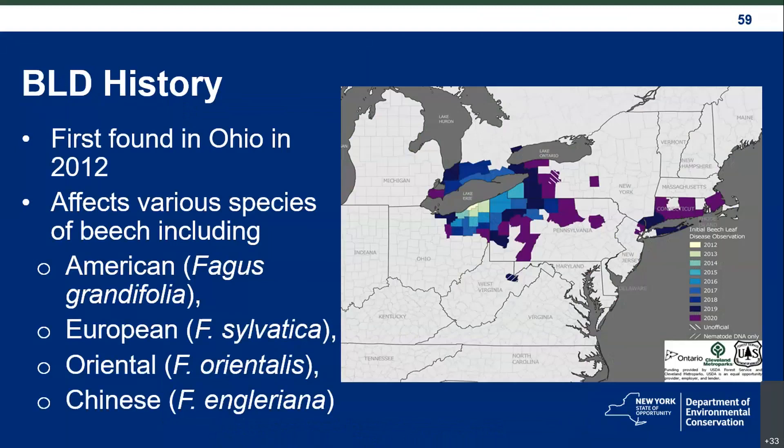A little history on beech leaf disease: it was first found in Ohio in 2012. Since then it's spread across the northeast into more than 70 counties. It affects various species of beech, including our native American beech as well as some species planted in urban settings or arboretums. It is currently in New York State and continuing to expand from the west, the southeast, and we also have some locations in central New York.